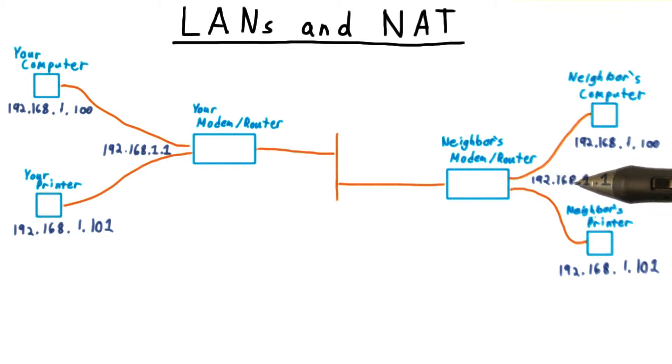Your neighbor might also have a local area network with a private IP address space, and maybe his printer and computer get the same addresses. This turns out to be okay.